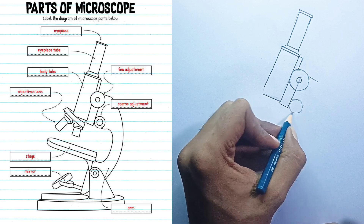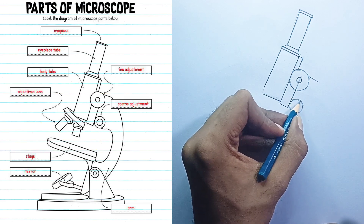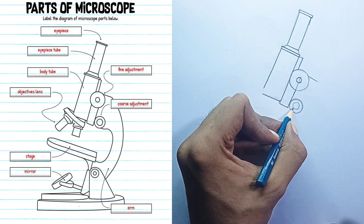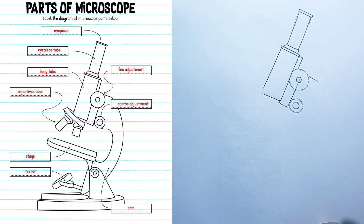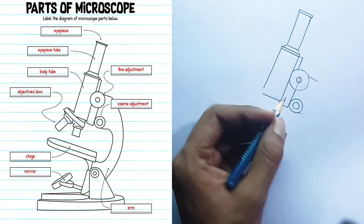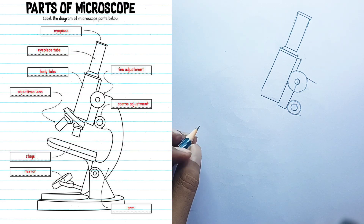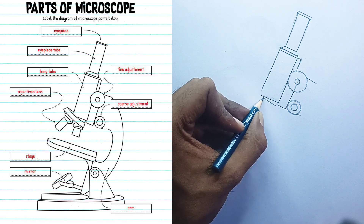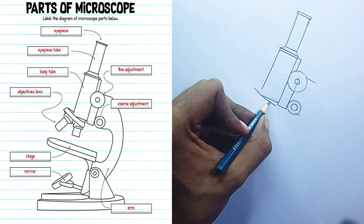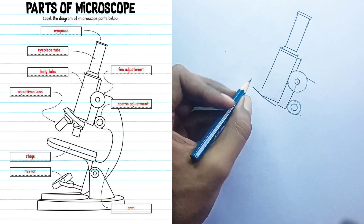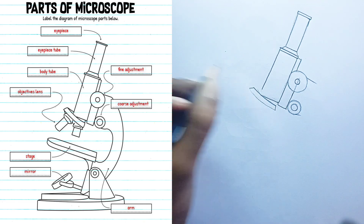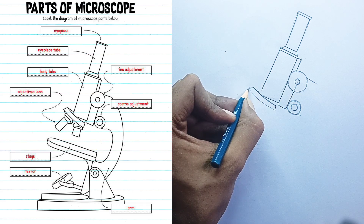Stage: this is the flat, horizontal platform where the microscope slide containing the specimen is placed for viewing. It usually has stage clips to hold the slide securely in place, and some stages are mechanical, allowing for precise movement of the slide. Mirror: located beneath the stage, this component is used to reflect ambient light or light from an external source upwards through the specimen and into the objective lens. In more modern microscopes, this is often replaced by a built-in light source or illuminator.